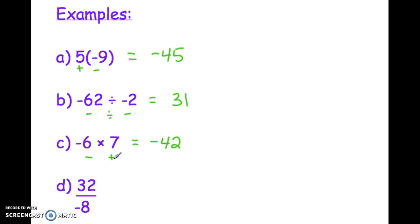And then the final one here, 32 divided by -8. That's -4. Again, we have a positive divided by negative, so different signs, negative answer. Okay, hopefully you're catching on and working on this as we go.